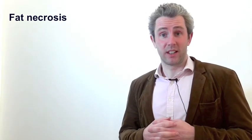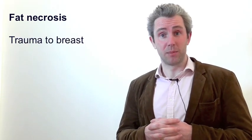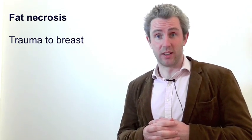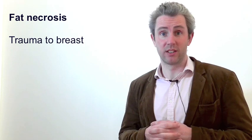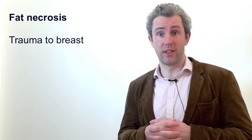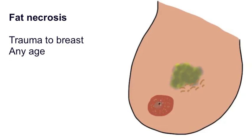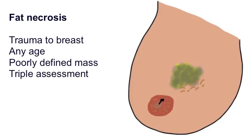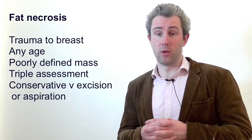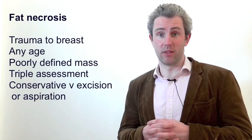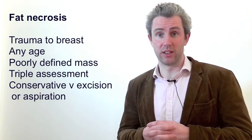Trauma to the breast can trigger local inflammation of glandular tissue and subsequent fat necrosis. The magnitude of the trauma may be minimal and go unnoticed. The average age of the condition is around 50 but it can occur at any age. Examination findings are similar to a malignant lump — a poorly defined, painless mass that may cause nipple or skin retraction — so triple assessment is very important. Excision can be performed if there is diagnostic uncertainty, and any oily cystic remnant can be aspirated if the patient wishes.